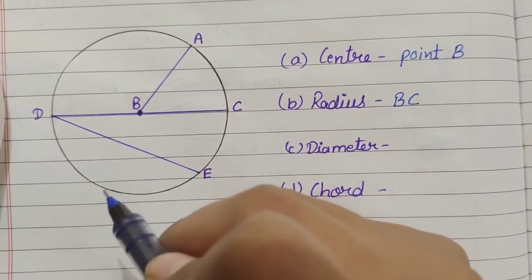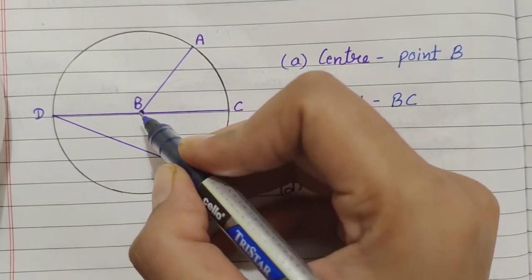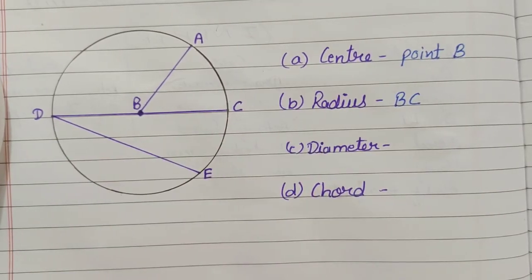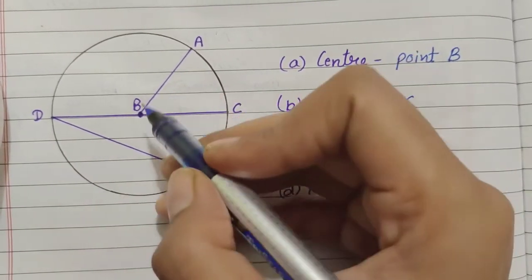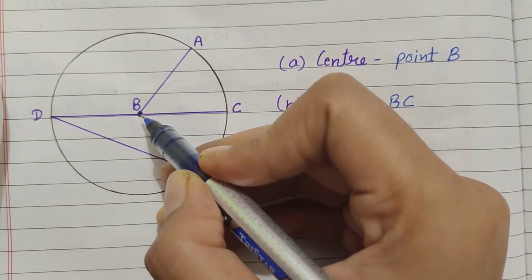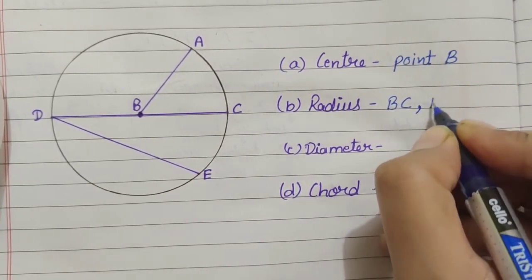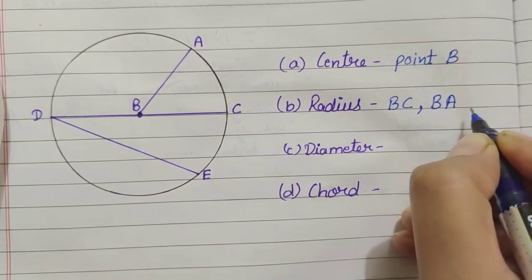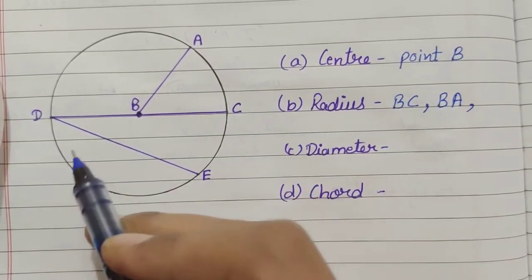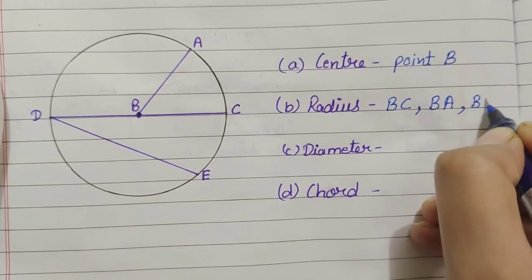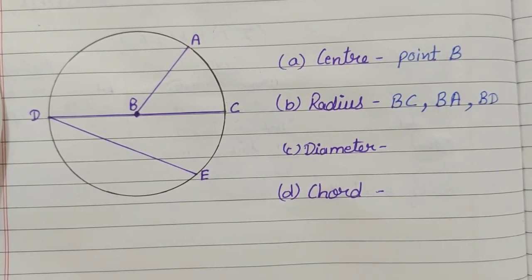Now, you can see that there are more radius as well. Like, B, A, B, D. These are also the radius of a circle. So, you will write it as well. So, B to A. So, comma, B to A. This is also the radius of a circle. And then, B to D. This is also the radius of a circle.